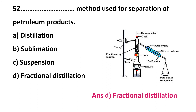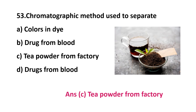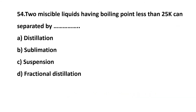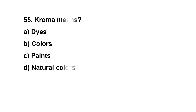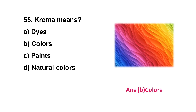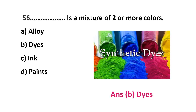Question 53: the chromatographic method is used to separate — colors in dye, drugs from blood, tea powder from factory, or drugs from blood? The correct answer is tea powder from factory. Question 54: two miscible liquids having a boiling point difference of less than 25 K can be separated by — distillation, sublimation, suspension, or fractional distillation? The correct answer is option D: fractional distillation. Question 55: 'chroma' means — dyes, colors, paints, or natural colors? The correct answer is colors. Question 56: __ is a mixture of two or more colors — alloy, dyes, ink, or paints? The correct answer is dyes — dyes are the mixture of two or many colors.